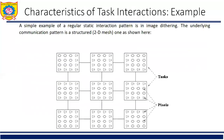A simple example of a regular static interaction pattern is image dithering. The image is formed of pixels, and the clarity of the image is determined by the intensity of the pixel. The underlying communication pattern is a structured 2D mesh, as shown here. In image dithering, the pixels communicate with each other in order to improve the clarity of the picture — one pixel from one block communicates with pixels from other blocks.